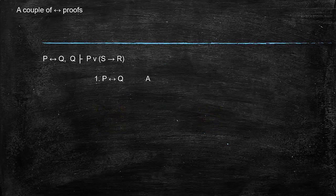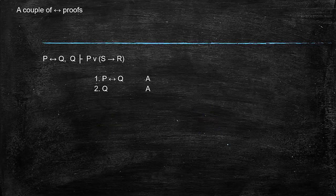Another proof. P if and only if Q, Q, show that P or if S then R. So again, shut it down, see how you would do this for a second. Okay, so what would you do? You have P if and only if Q, you have Q, and you want P or if S then R.